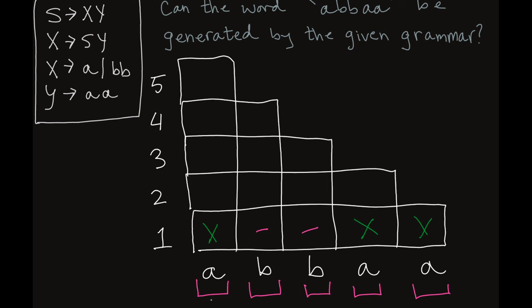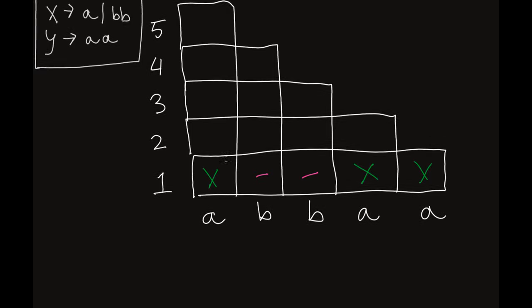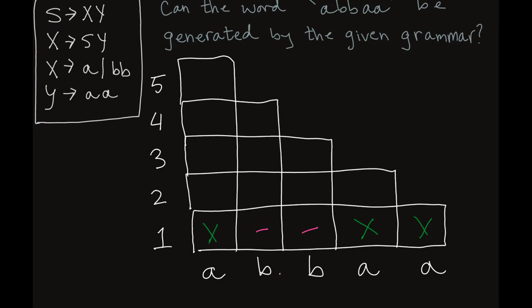That was all of our substrings of length one. Let's move on to substrings of length two, doing these one at a time. We've got AB. X can produce A, but we don't have anything that can produce just B. Looking back at our grammar, there isn't anything that produces AB, so we draw a line through that one.